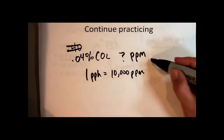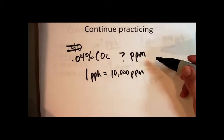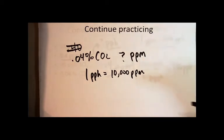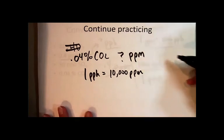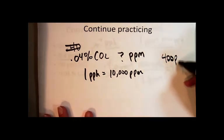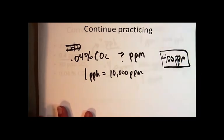Well why don't you try it on your own and the answer that you should get is, let's see, 400 parts per million is what you should get doing it that way. Try it on your own. That's the answer you should get.